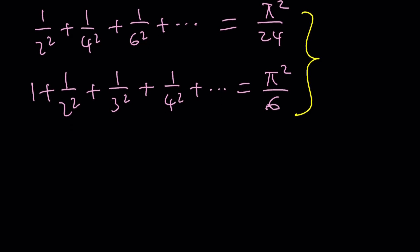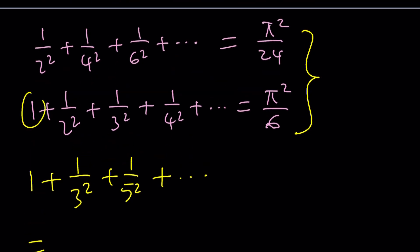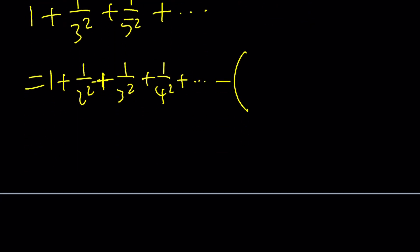So now we have these two sums. How can we use them to find the sum of the odds? The answer is simple: use inclusion-exclusion. If you're trying to find the odds, you have to get rid of the evens, and we know what the evens are.